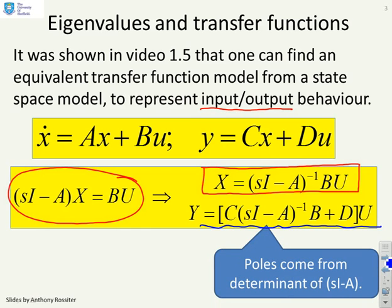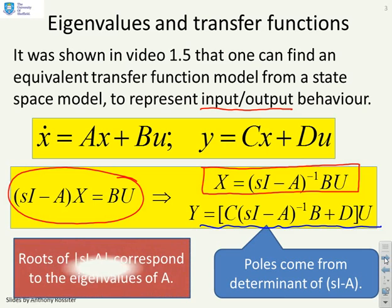An interesting point here is that the poles of this system come from the determinant of (sI minus A). And that should be obvious because you have an (sI minus A) inverse here. And another interesting observation, and a key one, is that of course the poles that come from the determinant of (sI minus A) are of course the same as the eigenvalues of A. Because the eigenvalues of A come from solving the determinant of (sI minus A) equals zero. So in fact the poles of this system are the eigenvalues of A.